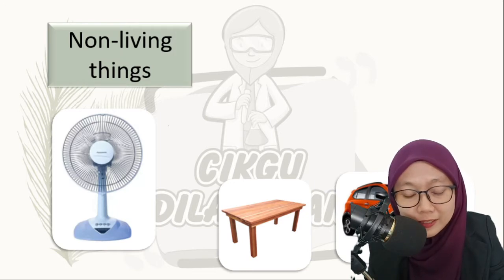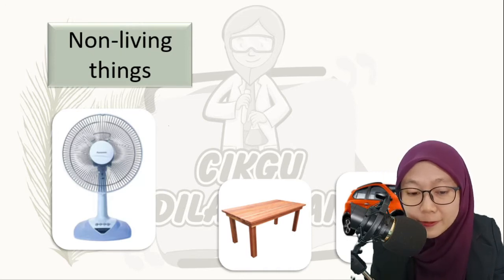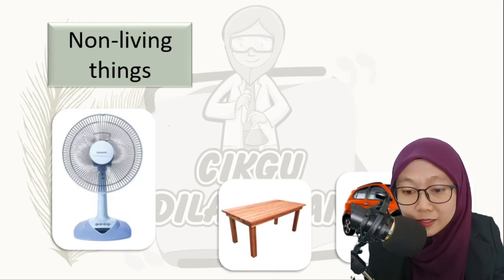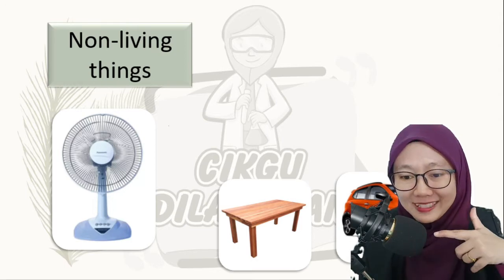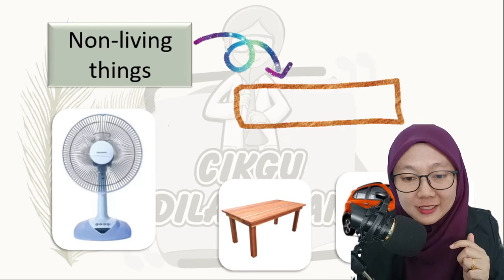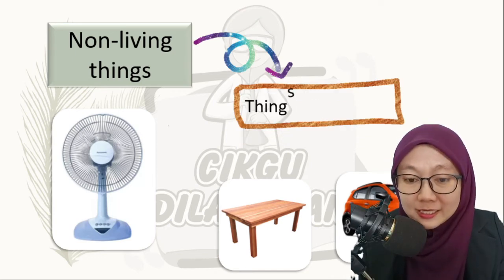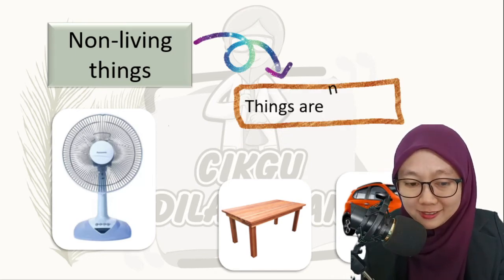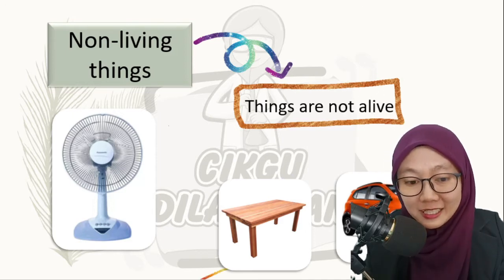Now let's move to non-living things. You can see there is a fan, there is a table, there is a car. And if you can see in front of me, there is a mic — this is also non-living things. Non-living things are things that are not alive.